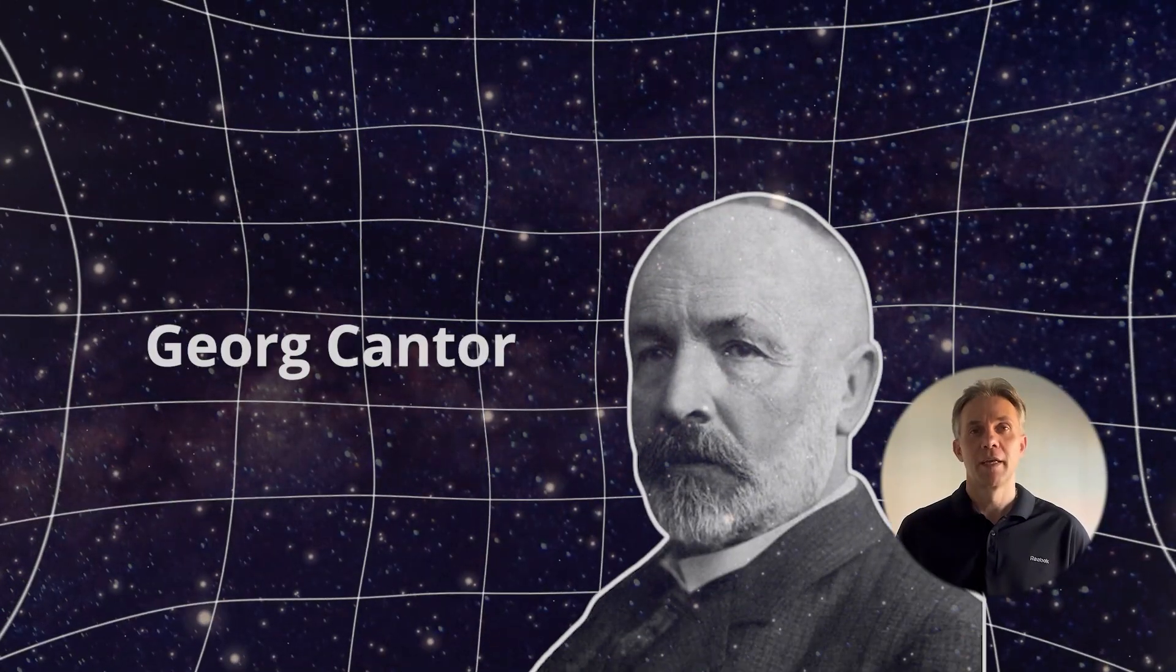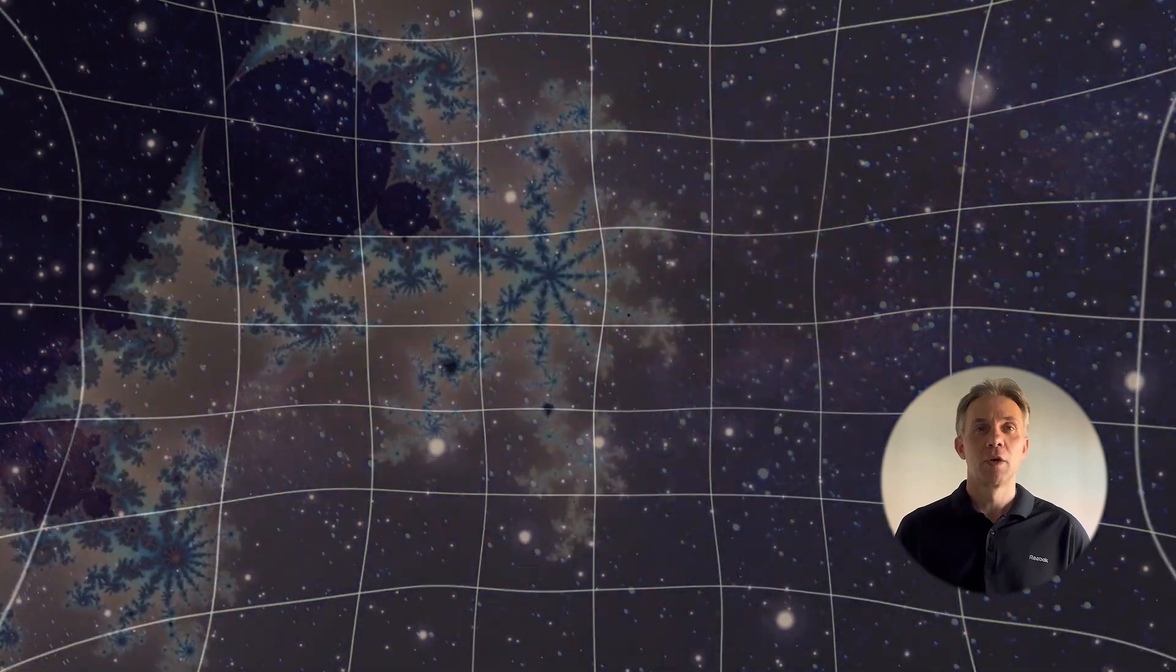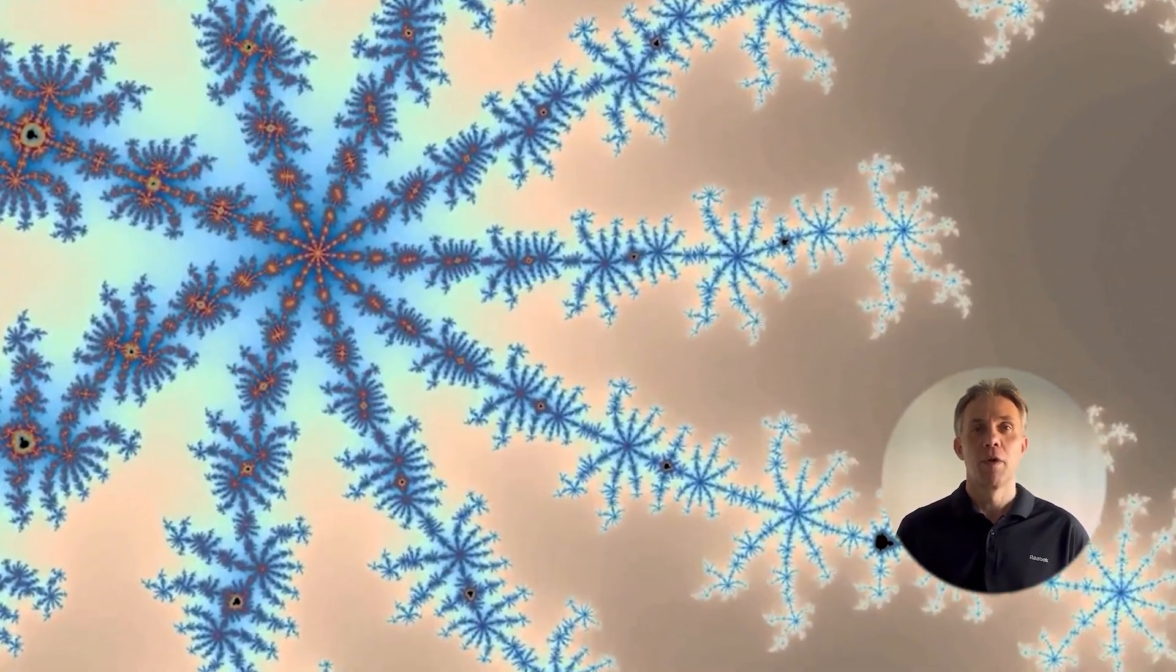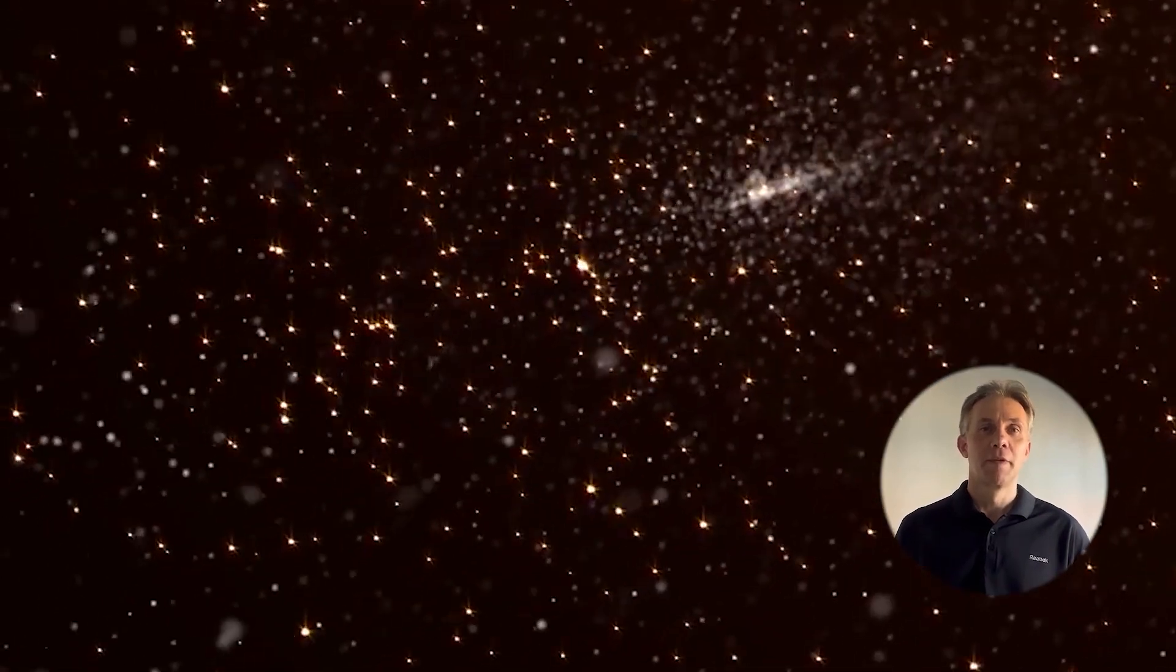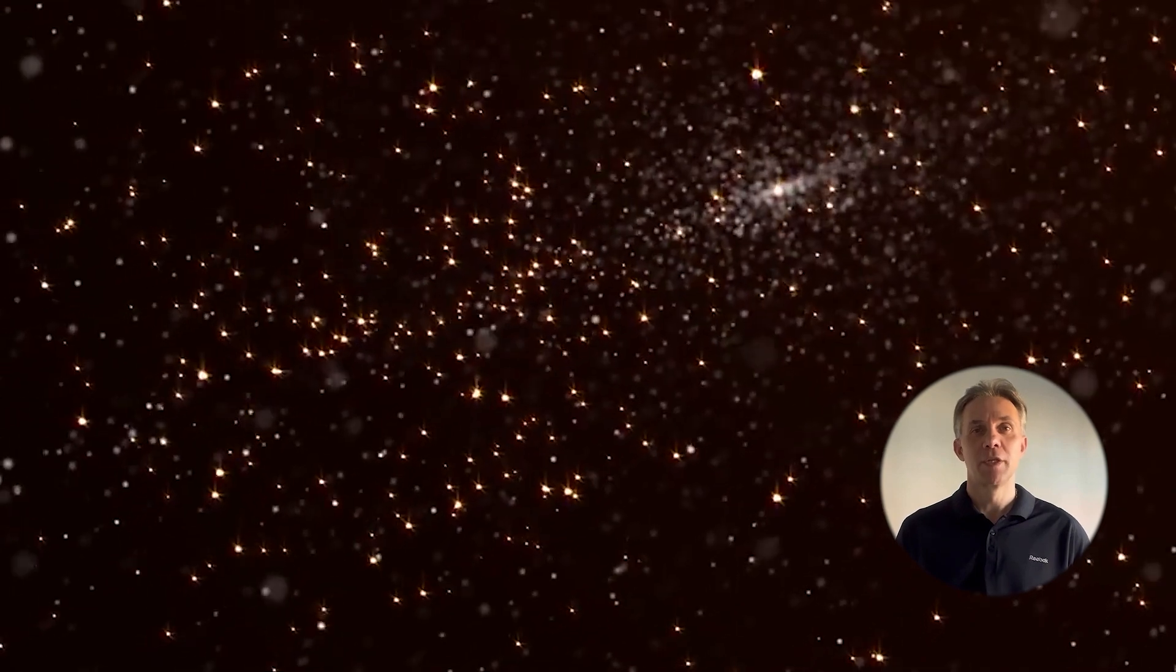In the 19th century, the German mathematician Georg Cantor introduced the idea that there are different types of infinity. He showed that although countable numbers include even and odd numbers, both groups are infinite. Astronomers today deal with concepts of infinite densities in black holes and the potentially infinite expansion of the universe.